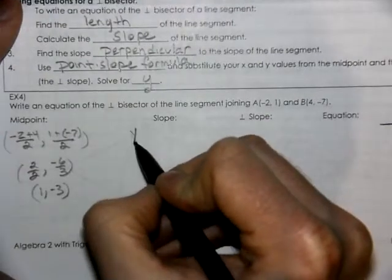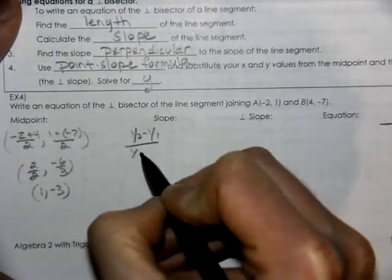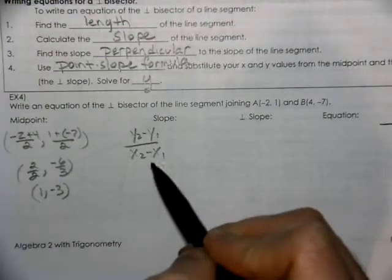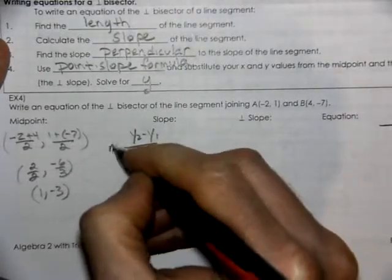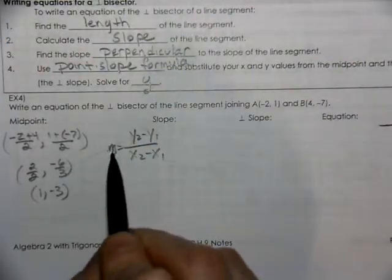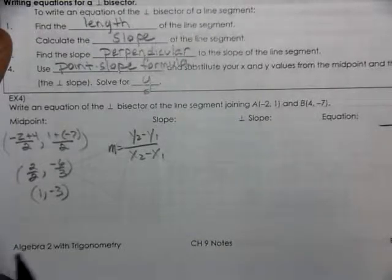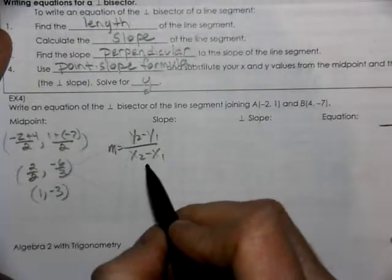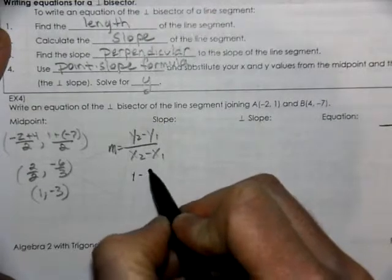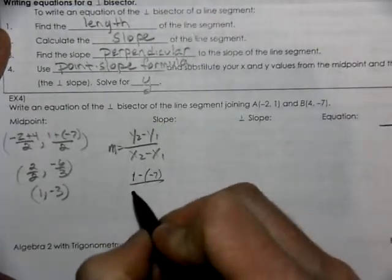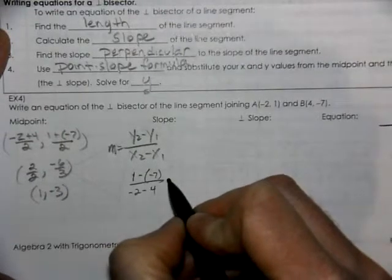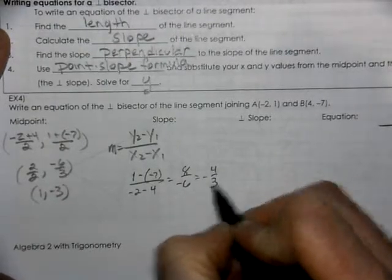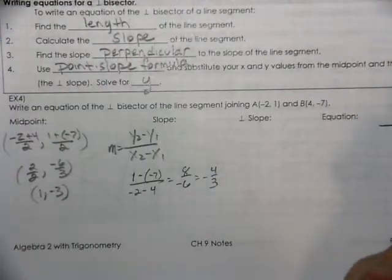Our slope, if you recall, that's y2 minus y1, x2 minus x1. Change in y over the change in x. That is called your slope, listed with an m. That's seen in y equals mx plus b. The slope is listed as an m. So we're going to take our y values 1 minus negative 7, and negative 2 minus 4, gives us 8 over negative 6, is negative 4 thirds. So that is the slope of the segment.